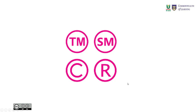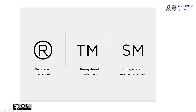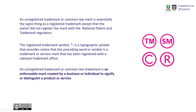Let's further look at the definitions. This is the registered trademark, unregistered trademark, and unregistered service mark. An unregistered trademark or common law mark is essentially the same thing as a registered trademark, except that the owner did not register the mark with a national patent and trademark regulator, so it means it's not registered. The registered trademark symbol — R — is a typographic symbol that provides notice that the preceding word or symbol is a trademark or service mark that has been registered with a national trademark office, meaning a registered service mark can also use this sign. An unregistered trademark is an enforceable mark created by a business or individual to signify or distinguish a product or service.